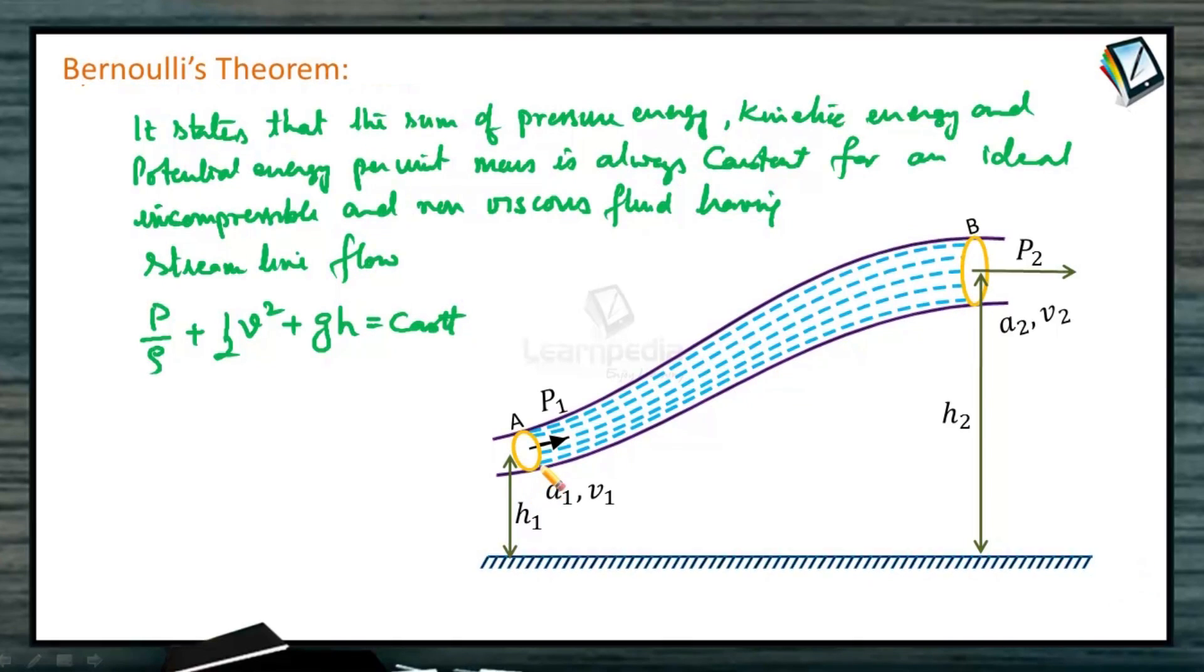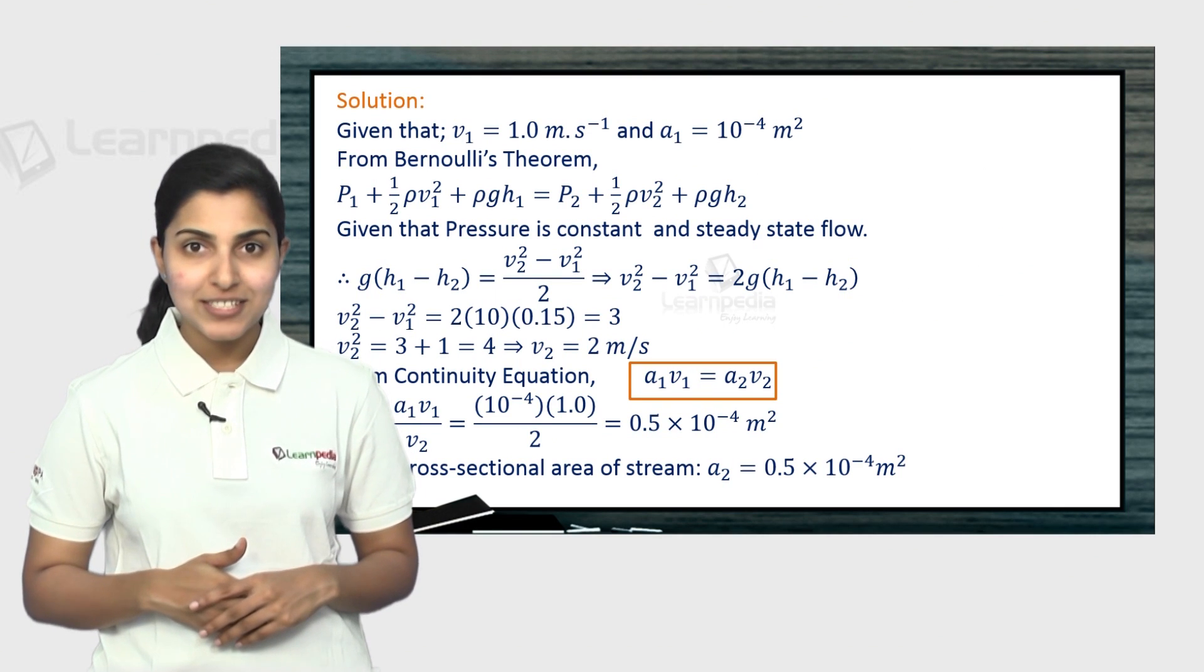So that means the pressure by density at point A plus ½V² at point A plus gH at point A should equal the pressure energy per unit mass plus kinetic energy per unit mass plus potential energy per unit mass at point B. I hope you can now answer the question.